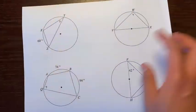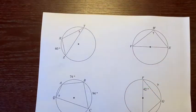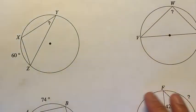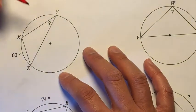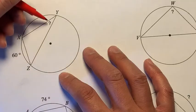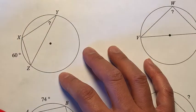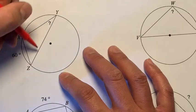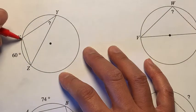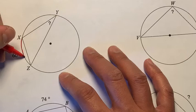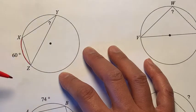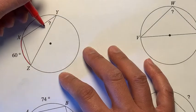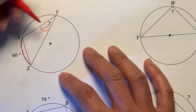Let's take this first one and zoom in. We're trying to figure out the measure of this angle, and this is an inscribed angle because its vertex is on the circle. This inscribed angle's intercepted arc is 60 degrees. Remember, inscribed angles are half of the intercepted arc, so this is 30 degrees.